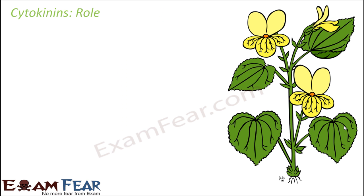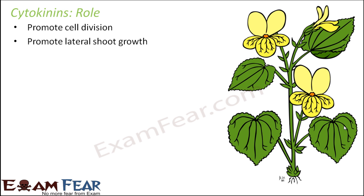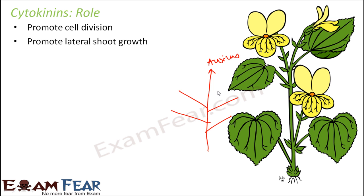Cytokinins promote cell division — that is why they are known as cytokinins. They also promote lateral shoot growth, and that is why they complement auxin, because auxin helps to promote vertical growth. When you talk about the overall growth of a plant, you not only talk about vertical growth but lateral growth as well. Auxin promotes vertical growth alone and does not promote lateral growth, so cytokinins and auxin together can give very good growth to the plant. Cytokinins can thus overcome apical dominance.